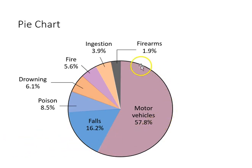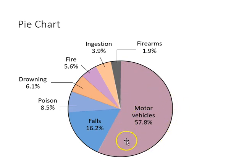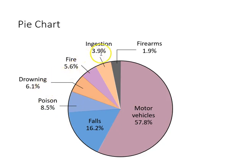You can see the majority of accidental deaths are due to motor vehicles, followed by falls, poisoning, drowning, and firearms.